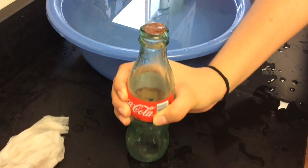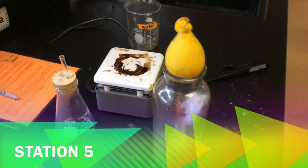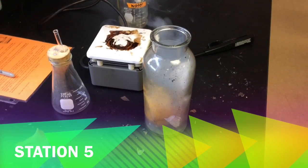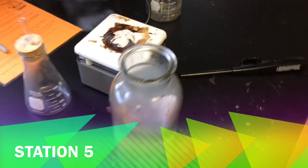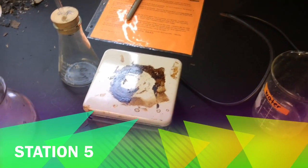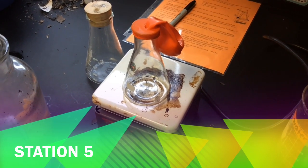At station five we are lighting a piece of paper on fire and putting it into our container and topping it off with a balloon. The other part is we've got a hot plate and we're gonna come back and see what happens to this balloon after it sits on the hot plate for a couple of minutes.